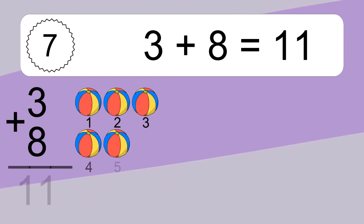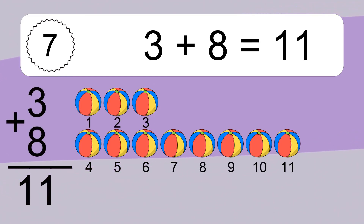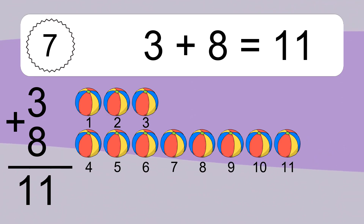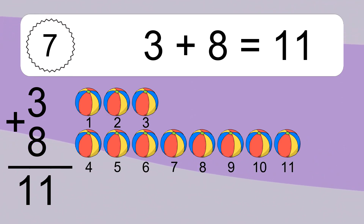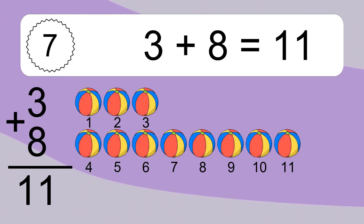3 plus 8 equals 11. Let's count it. 1, 2, 3, 4, 5, 6, 7, 8, 9, 10, 11.